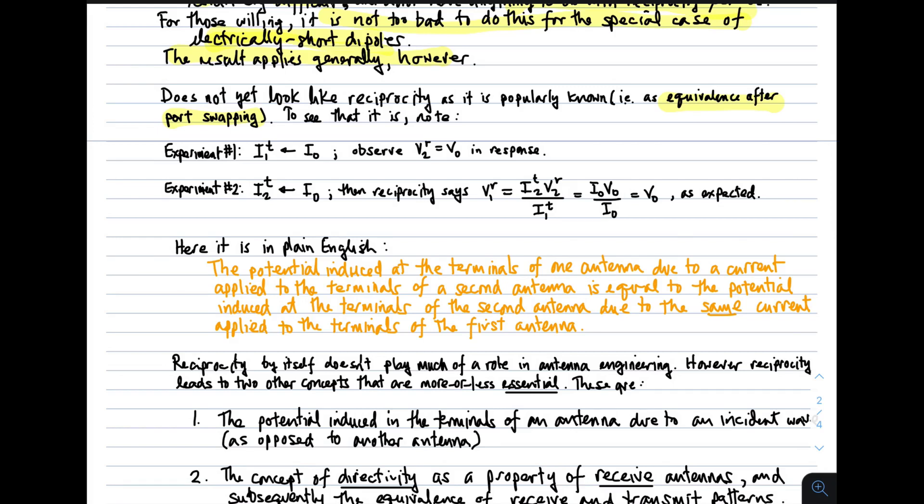Port one and port two can be interchanged, and the system works the same way. To see that this actually does describe that more common interpretation of reciprocity, just do the following experiment. In experiment one, you say that I1 super T is equal to some constant, I0. That's the stimulus. Then you observe V2R is V0 in response. So you do that experiment. You apply I0 to port one. You observe V0 on port two. Then you move on to experiment two. You apply the same current, the same stimulus, but now to port two. And then you see what reciprocity has to say about this. Solving the equation I just came up with for V1 super R, you get I2 super T V2 super R over I1 super T, which, according to the experiment I just did, is I0 V0 over I0, which is V0, which is exactly what you expect. So here's reciprocity in plain English.